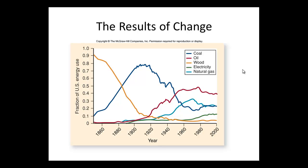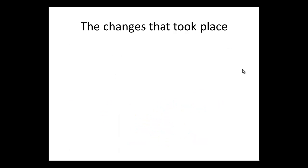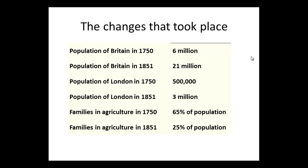Why did this come about? Let's think about this in a little more detail — the changes that took place. With the introduction of burning coal and the Industrial Revolution, there was a huge cultural shift. Looking at Britain, the population in 100 years went from 6 million to 21 million people. This wasn't necessarily driven by coal, but it introduced steps forward in being able to preserve and maintain life. The Industrial Revolution was, overall, a safer environment in some ways.